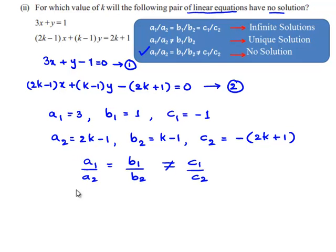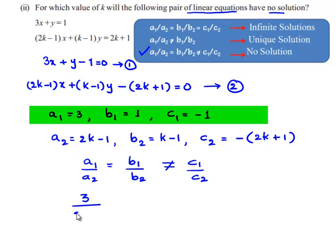Substituting the values: a₁/a₂ = b₁/b₂ becomes 3/(2k - 1) = 1/(k - 1).